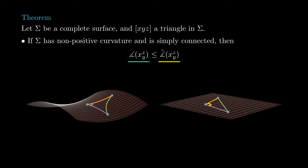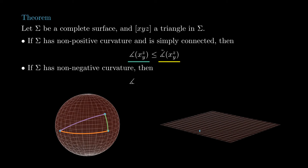The main comparison theorem we will discuss today is the following. Assume sigma is a complete surface, and take x, y, z a triangle in sigma. If sigma has non-positive curvature and is simply connected, then the angle at x is always less than or equal to the comparison angle at x. This theorem is just another instance of the fact that triangles in negative curvature are thin and triangles in positive curvature are fat.